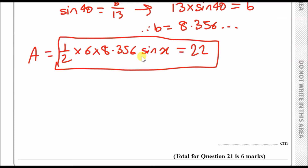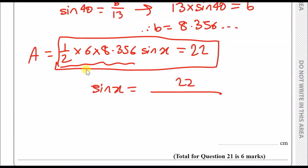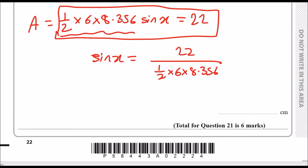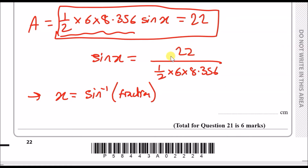We divide the numbers across to isolate sine X: sine X equals 22 over (half times 6 times 8.356). To get X, we apply the sine inverse. Putting that fraction into the calculator gives approximately 0.8-something, and the sine inverse of that gives 61.35 degrees.